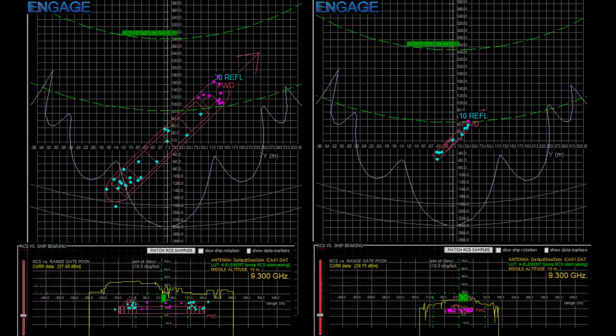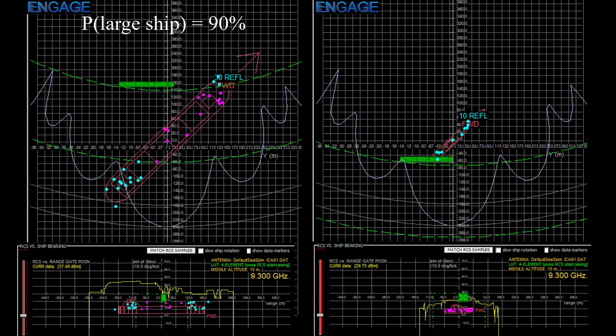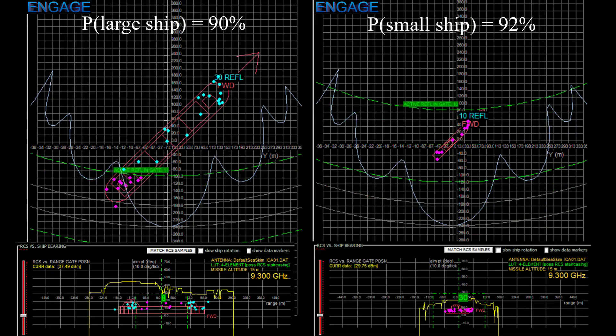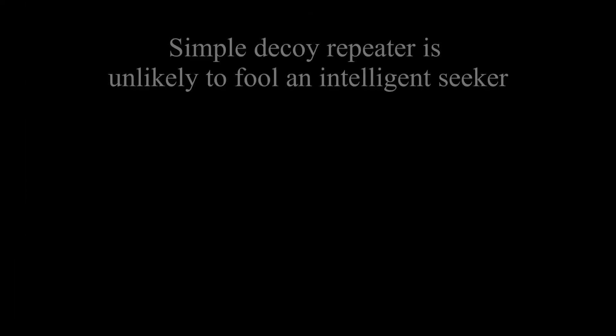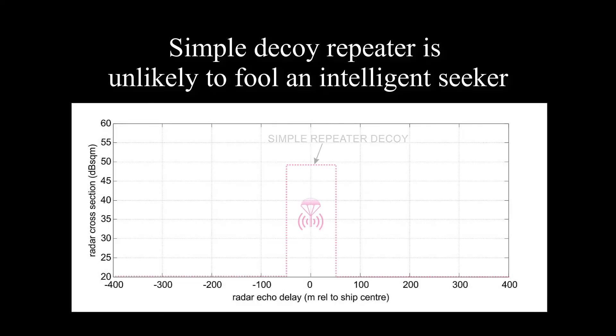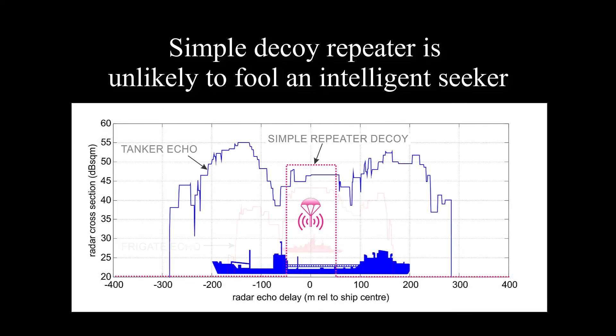The seeker can process the echo to check if it came from a ship-sized cluster of reflectors. It might even be able to figure out what size the ship is, or make a pretty good guess at what type of ship it is. Now a decoy that sends back a flat-top pulse will not fool a seeker that's looking for a pulse that's been time-stretched and whose amplitude has been corrupted by reflectors all along the length of the ship.